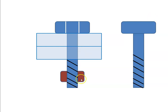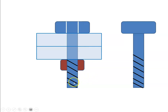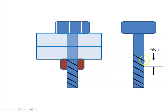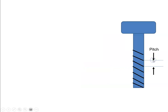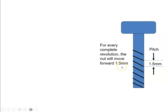So if I have this nut on this left-hand threaded bolt, when the nut turns it goes up along the bolt, and the distance it travels is related to the pitch. So if I have a bolt that has a pitch of 1.5 millimeters, that means when the nut does one full revolution it will travel forward 1.5 millimeters.